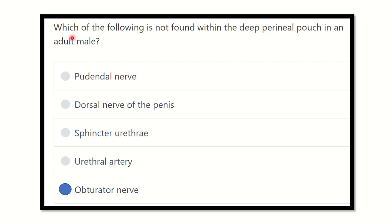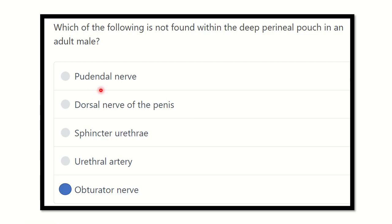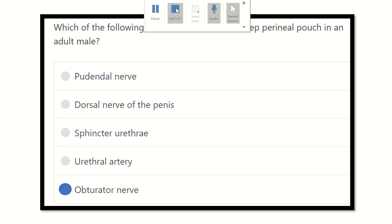So our final answer: the structure NOT found within the deep perineal pouch is the obturator nerve. All other options — urethral artery, sphincter urethrae, dorsal nerve of the penis, and pudendal nerve branches — are contents of the deep perineal pouch. The obturator nerve is not a content of the deep perineal pouch. Thank you all.